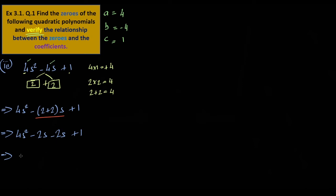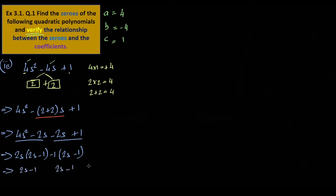It's just a common 2s — 2s minus 1 — and here the common level is 2s minus 1. So 2s minus 1 into 2s is equal to 1 by 2.